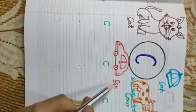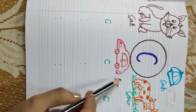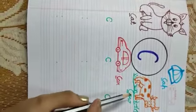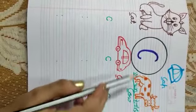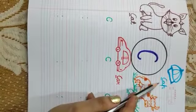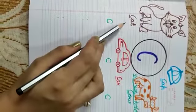And C for car. C for car. C for cow. C for cap. And C for cat.